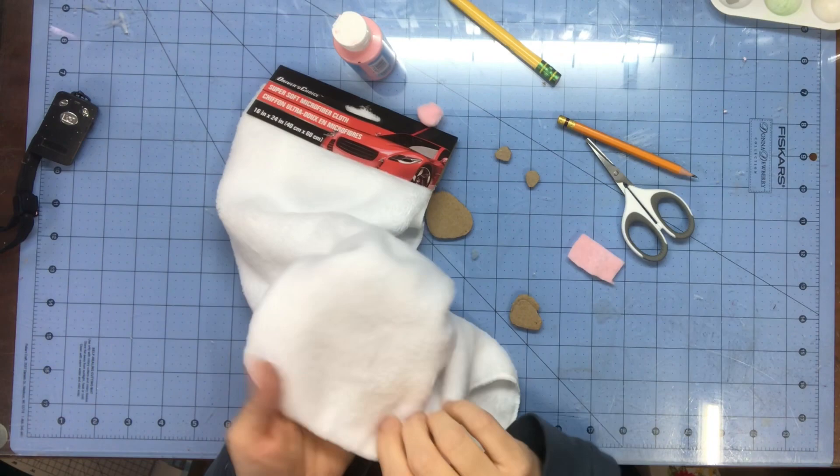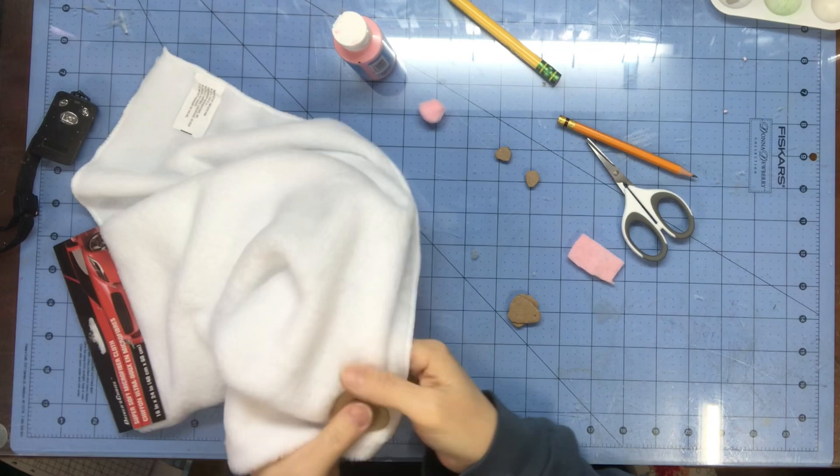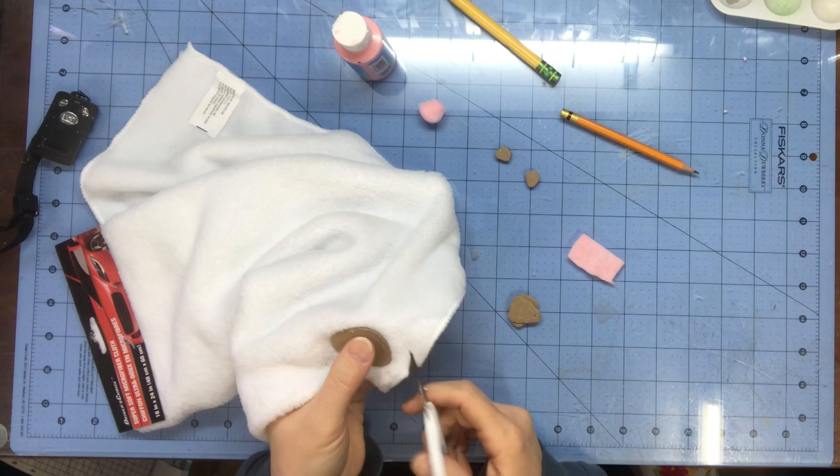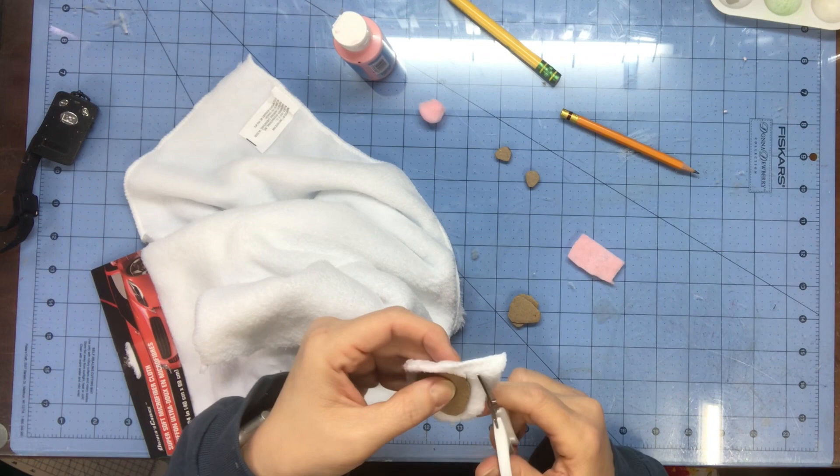I'm going to take this microfiber cloth from the Dollar Tree. You can find them in the automotive section. It has a fluffy side and a not-so-fluffy side. I want the not-so-fluffy side, and I'm going to fussy cut around my cardboard piece. I don't want this the same size; I want it a little bigger so I can fold it in.